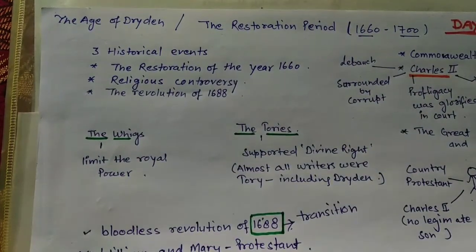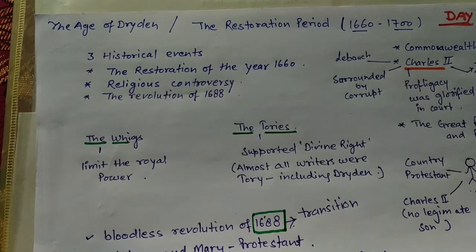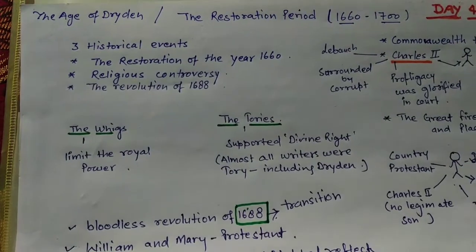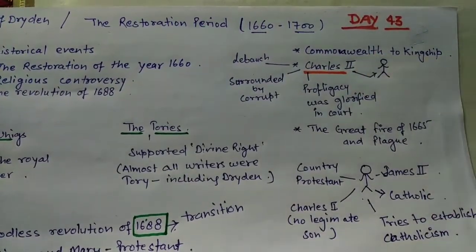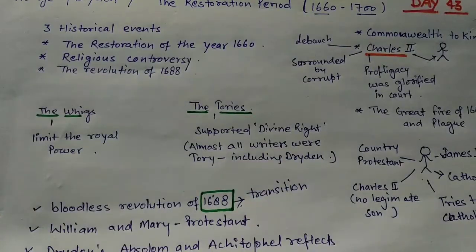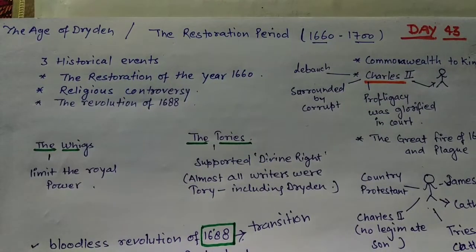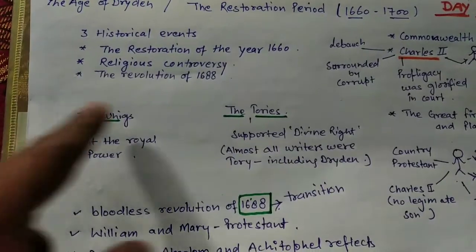If we are talking about the Restoration Period, the first question that comes to mind is: what is the Restoration? It was the restoration of Charles II from the Commonwealth — from Commonwealth back to kingship. If you haven't watched my previous video on the Age of Milton, you may not fully understand, so watch the previous videos to understand what the Commonwealth was and how it happened.